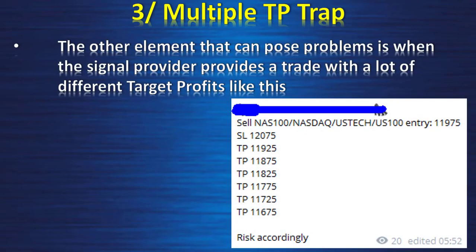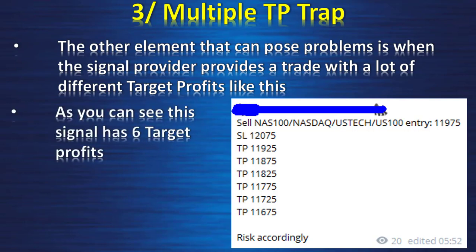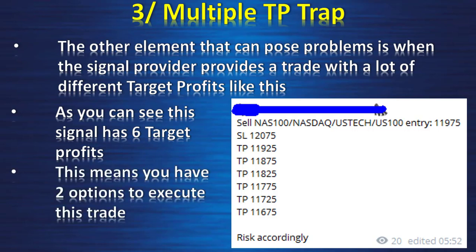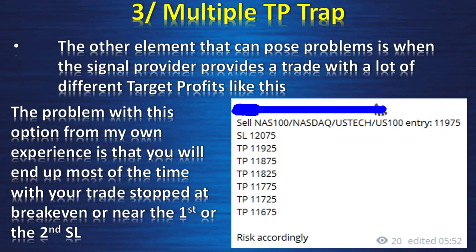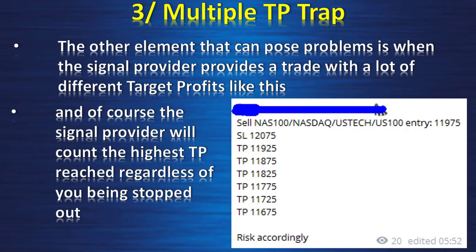Multiple target profit trap: problems arise when the signal provider gives a trade with many different target profits — for example, six target profits. Your first option is to place one trade and trail your stop loss as each target is reached: move to breakeven at TP1, then to TP1 when TP2 is reached, and so on. The problem is you will most often end up stopped at breakeven or near TP1, yet the signal provider will count the highest target profit reached regardless of you being stopped out. This is very unfair and allows them to manipulate their apparent results.